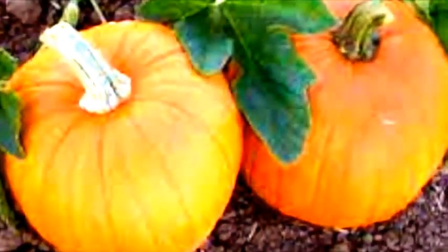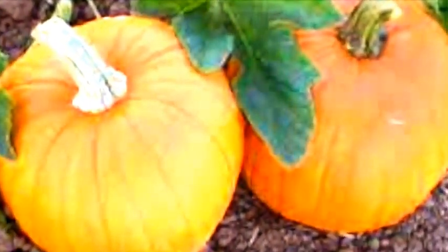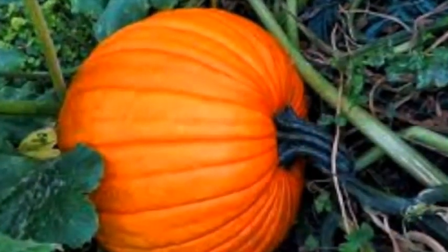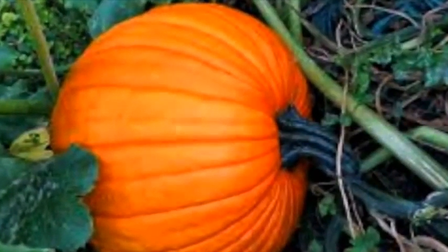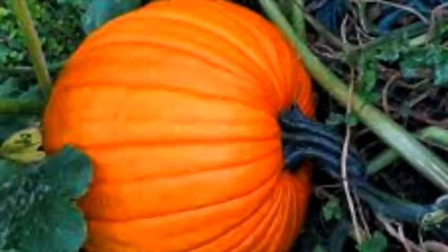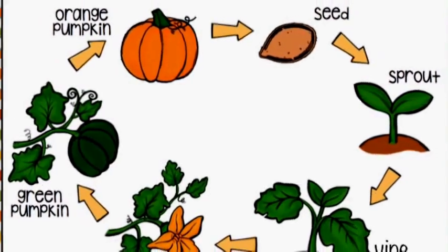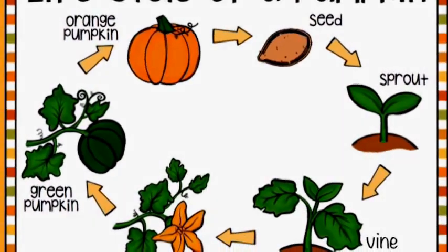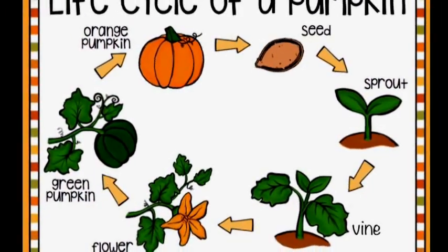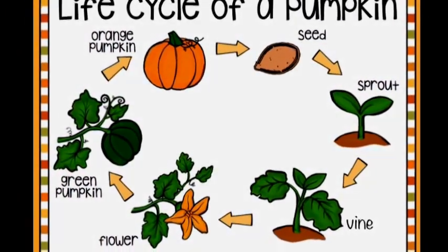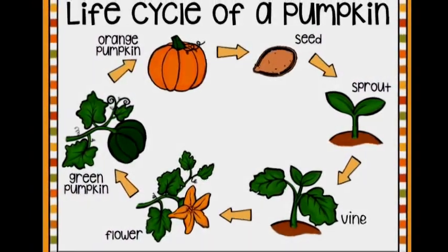Finally, the pumpkin turns orange and it is ready to be picked. It takes five months for a pumpkin seed to turn into an adult pumpkin. That's the life cycle of a pumpkin: seed, sprout, vine, flower, green pumpkin, adult orange pumpkin.